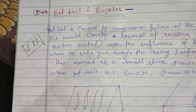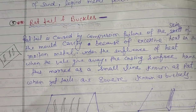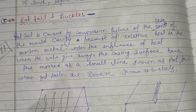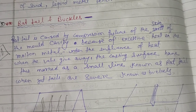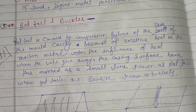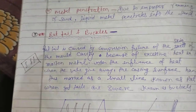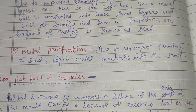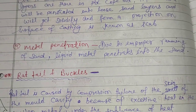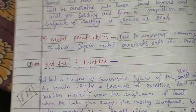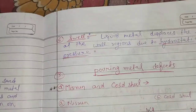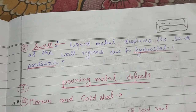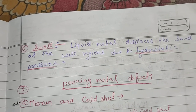The next defect is buckles. Red tail is caused by compression failure of the skin of the mold cavity. Another defect is metal penetration — due to improper ramming of sand, liquid metal penetrates into the sand, which is called metal penetration. Swell is also a type of molding defect where liquid material displaces the sand at the wall region due to hydrostatic pressure.